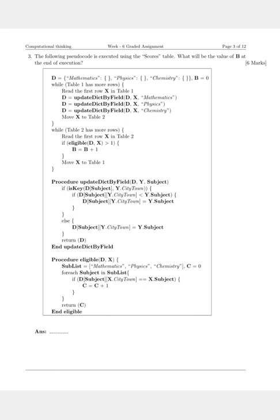Then we return this dictionary and we move on to the second block of code where we see that while table 2 has more rows, because all the cards from table 1 have now been moved to table 2, we read the first row x in table 2 and we see that if eligible, which is another helper function which takes two parameters, the dictionary and the current card, if that is greater than 1 then we increment b by 1. What is happening here now?